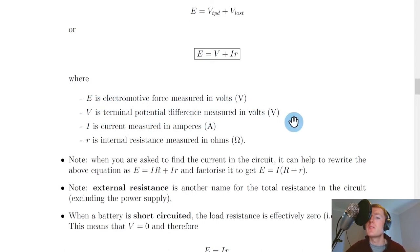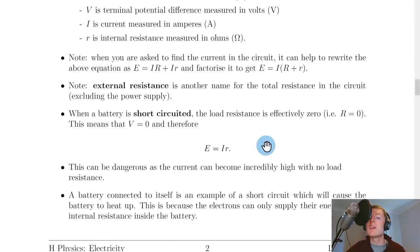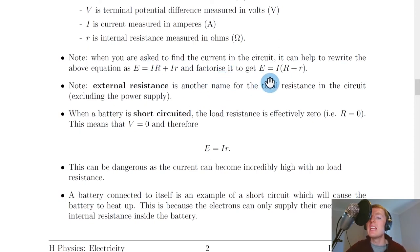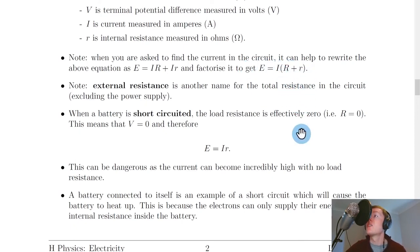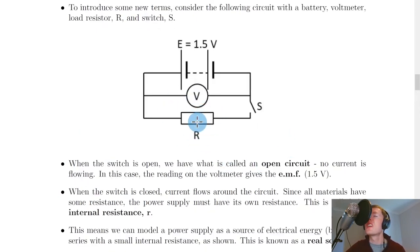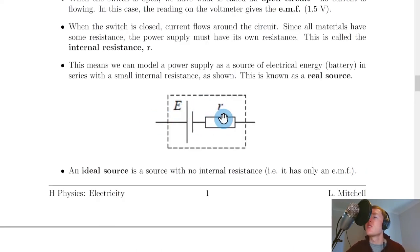When finding the current in the circuit, it can help to rewrite the equation as E = IR + ir, expanding V using Ohm's law. We can then factorize to get E = i(R + r), taking the current outside the brackets. This lets us solve for current directly. Note that external resistance is the total resistance in the circuit excluding the power supply, while internal resistance is the small resistance of the power supply itself.